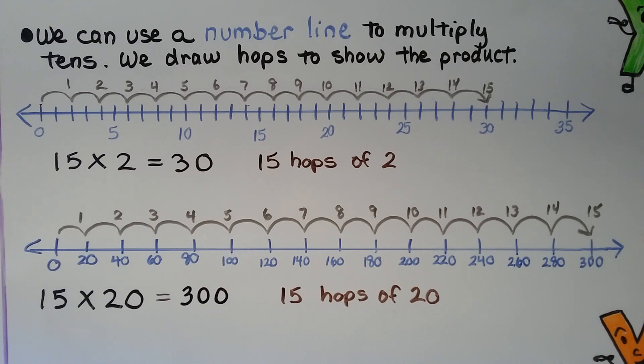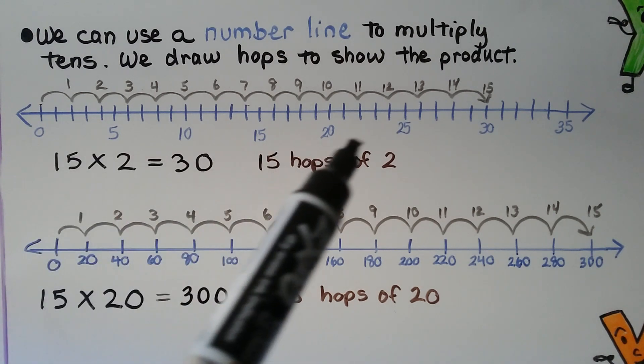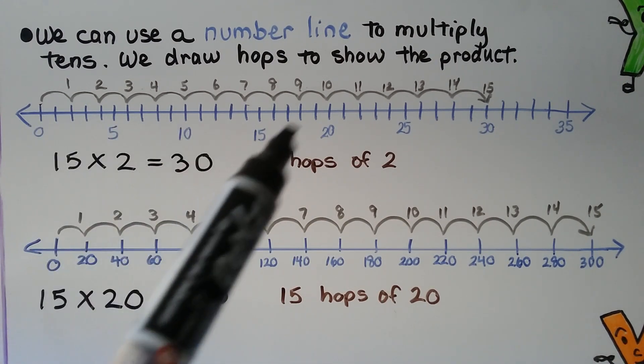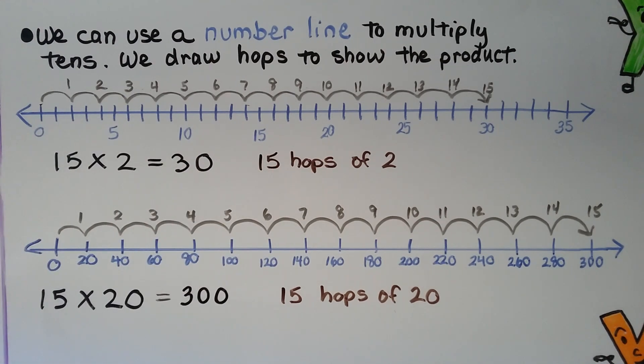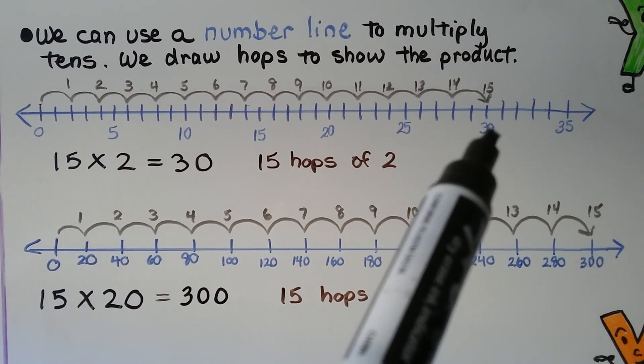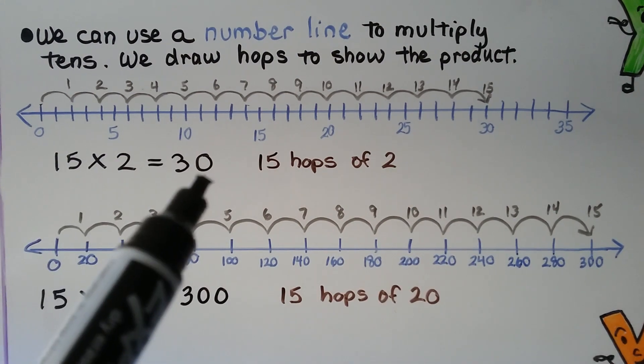For our next strategy, we can use a number line to multiply 10s. We draw hops or jumps to show the product. For 15 times 2, we have a number line here, and you can see it's going 5, 10, 15, 20, so we have the numbers in between. For 15 times 2, we're going to do 15 hops of 2 each. And when we do our 15 hops, we land at 30. So 15 times 2 is 30.